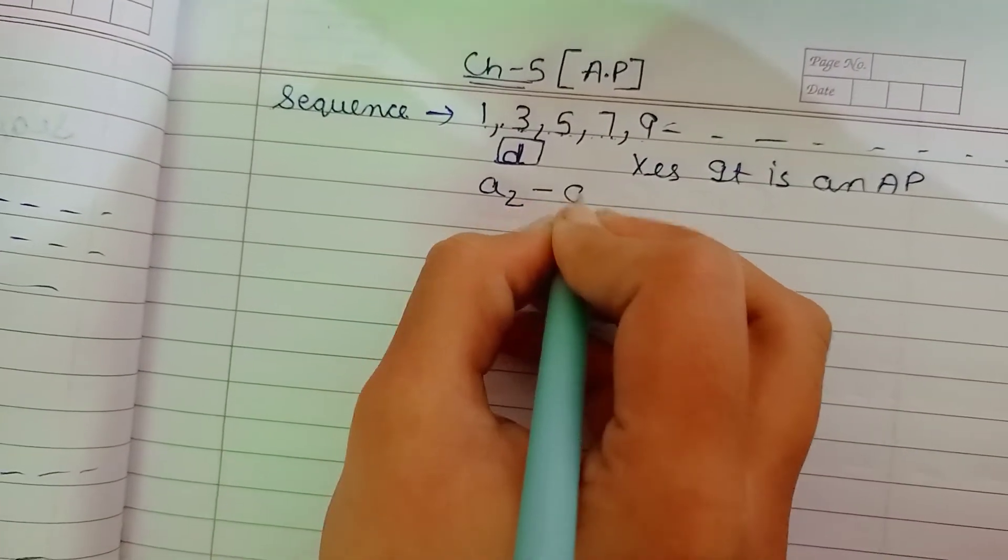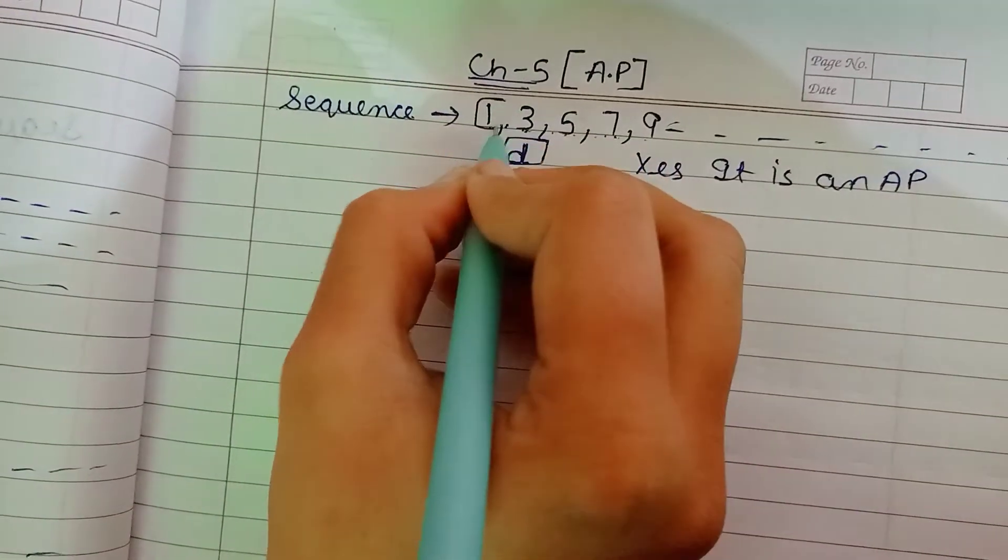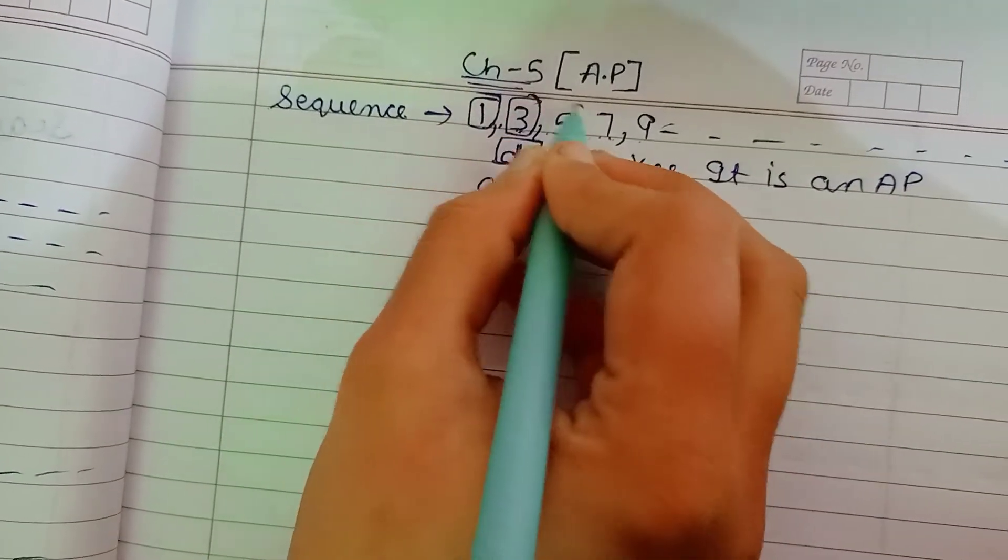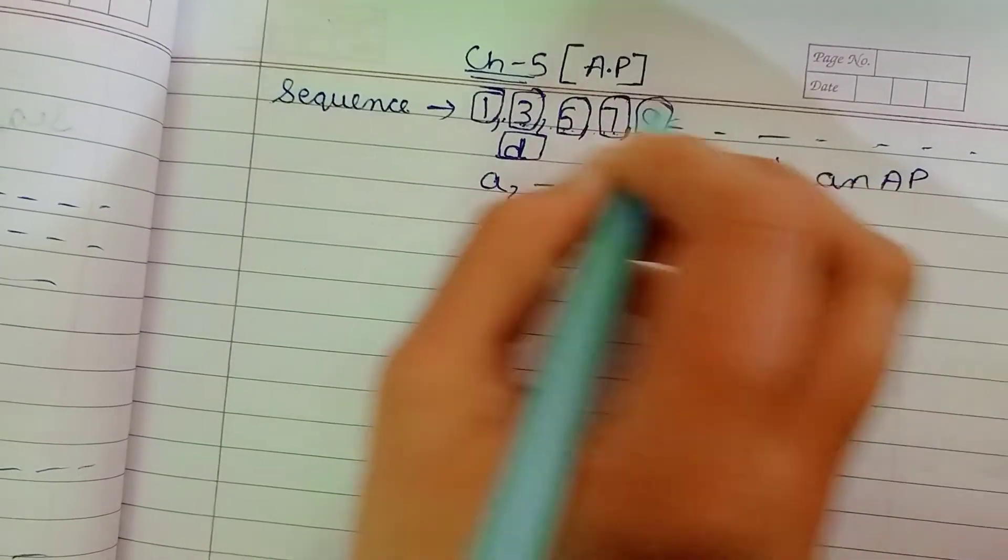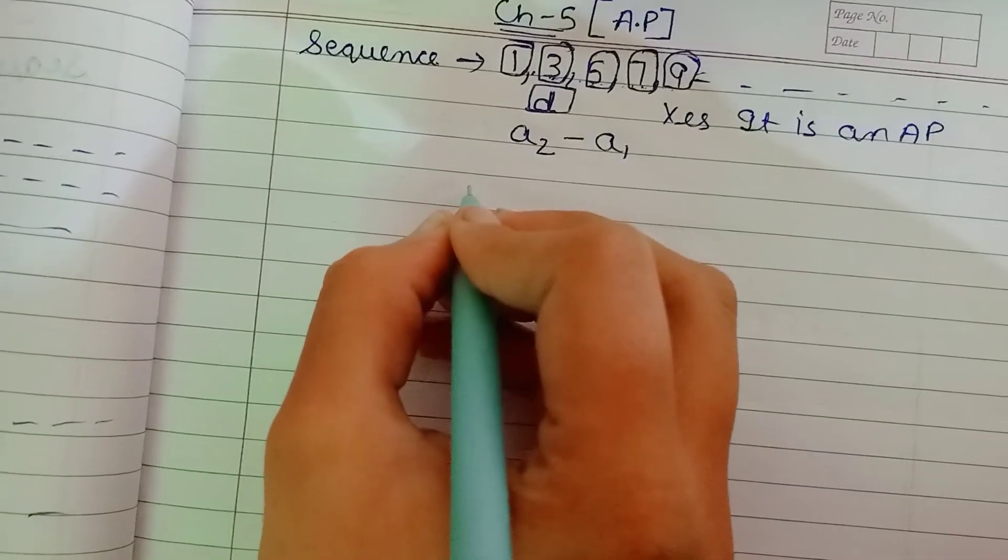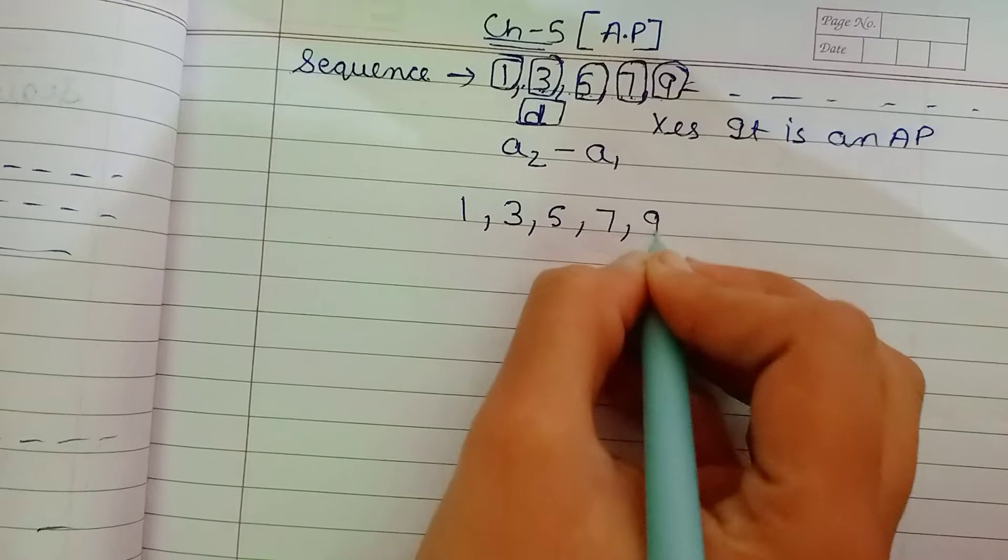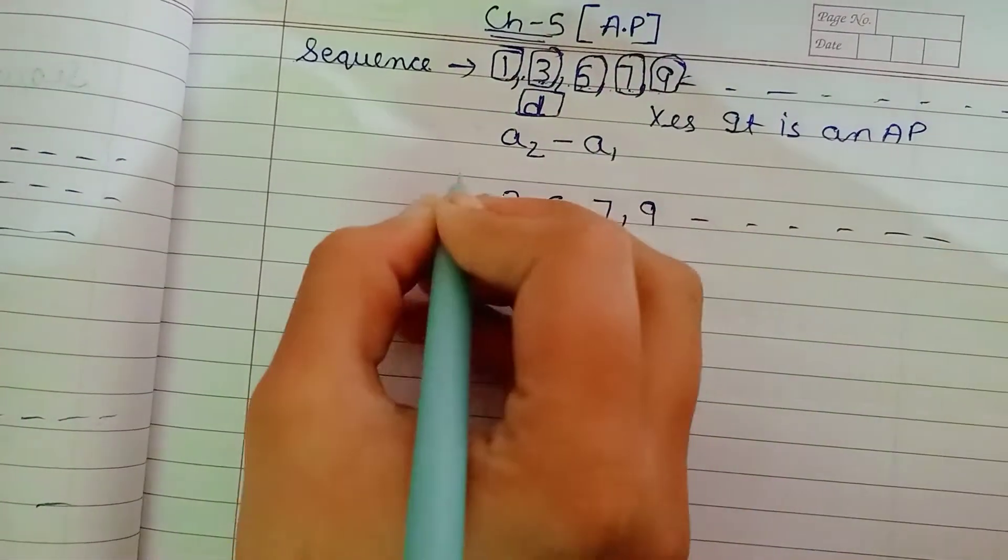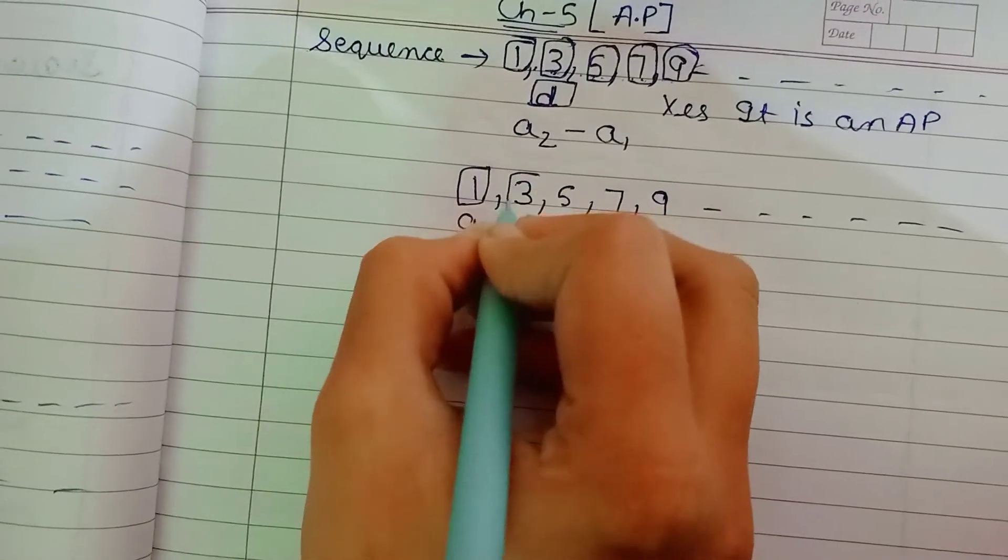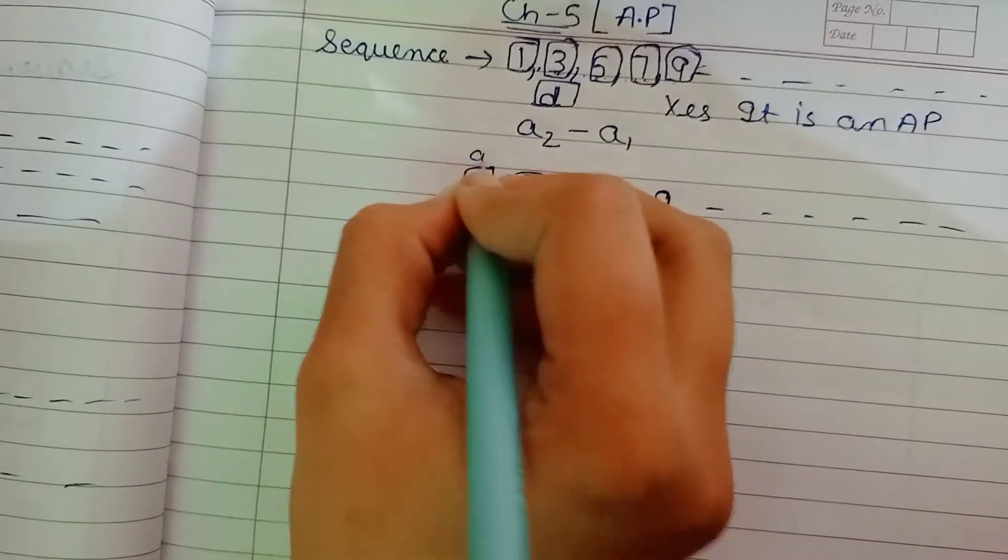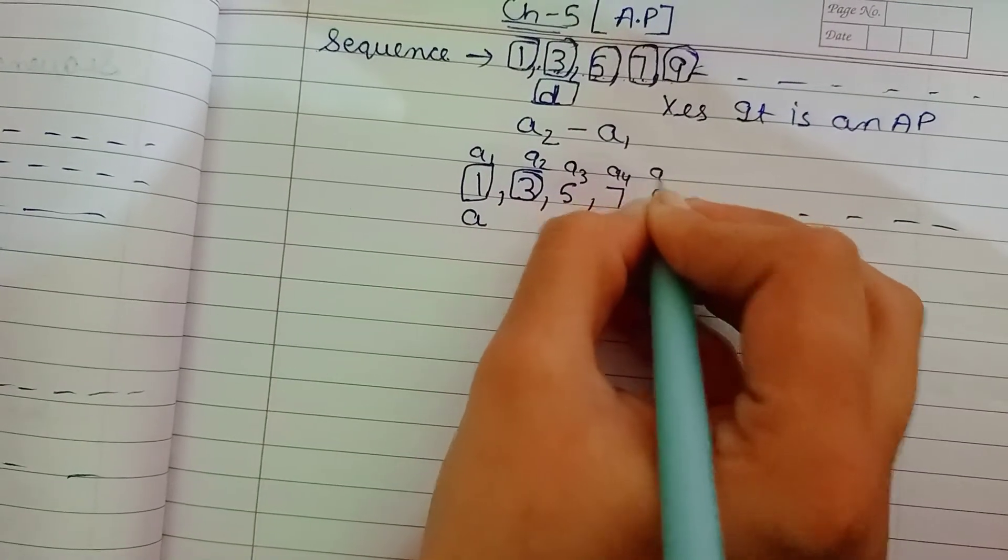From the common difference, what happens in the gap between the common difference we will say. The common difference between 3 and 5 and 7 and 9, we write a2 minus a1. This is the first term. We can also use a to write a second term. This is the second term. We can also use a1, a2, a3, a4, a5.